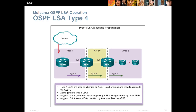Type 4 is going to be from the Autonomous System Border Router. Type 4 propagates to other networks and is used to advertise the ASBR to others. The ABRs generate Type 4, and it is generated by the original ABR and regenerated by other ABRs. The link-state ID is identified by the router ID of the Autonomous System Border Router. This router connects our autonomous system to the internet or to another network — that's our ASBR — and it propagates typically our Type 4 LSAs.